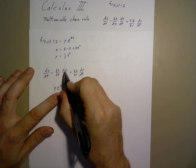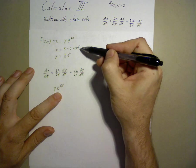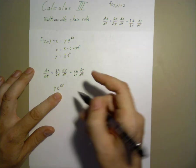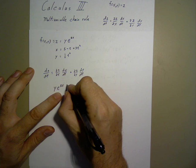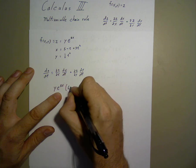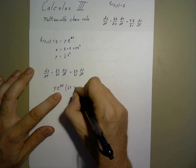y e to the 8x times the time derivative of x, which is 6t minus 1.